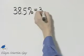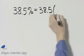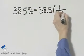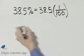So I'll write this number down, thirty-eight and five-tenths, and then remember what percent means as a fraction. It means one over one hundred.